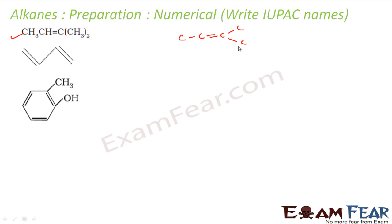So now if you just name this, this will become 1, 2, 3, 4. So now the name of this will be what? At second I have a methyl position, 2-methyl group, so 2-methyl, 4-carbon, bute, at 2 I have a double bond, bute-2-ene. This will be the name of this compound.